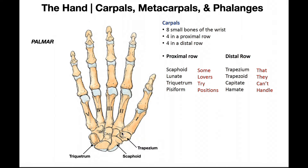So the distal row mnemonic is 'that they can't handle.' Putting it all together: scaphoid, lunate, triquetrum, pisiform on top of it, then going back over to the thumb side in the distal row — trapezium, trapezoid, capitate, and hamate. In total: 'Some lovers try positions that they can't handle.' What they say is that the dumber or the dirtier the mnemonic is, the easier it is to remember — and this one always stuck. So thank you to my instructor.